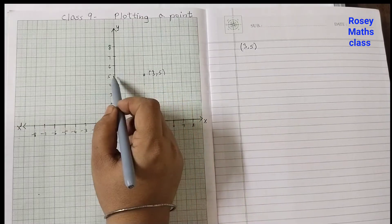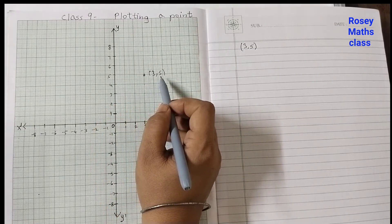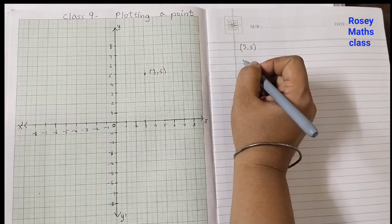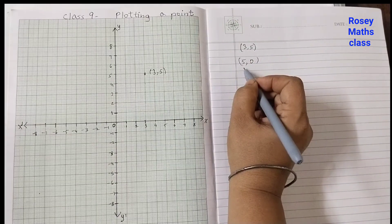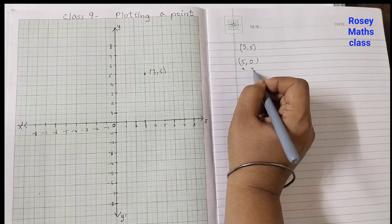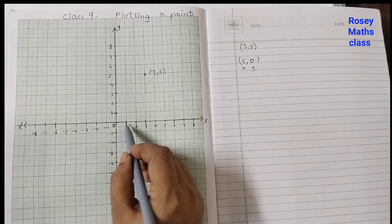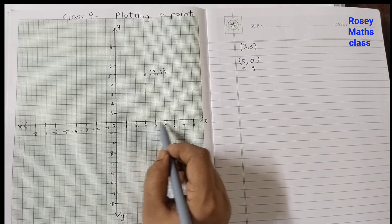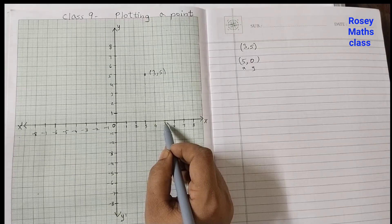Let's say I want to plot five comma zero. So five is on the x-axis and zero is on the y-axis. One, two, three, four, five: x-axis towards the positive side. And zero, that means y-axis is zero.